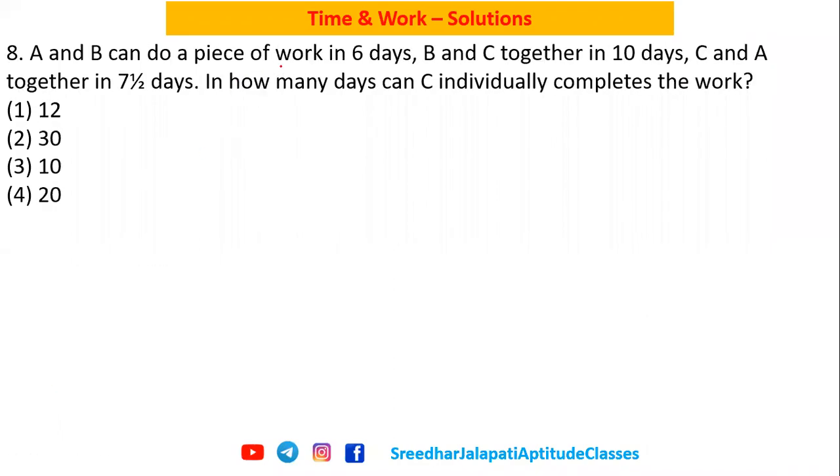Here is the solution for question number eight from Time and Work. A and B can complete a work in six days, B and C together in ten days, and A and C together in seven and a half days, which is 15 by 2.